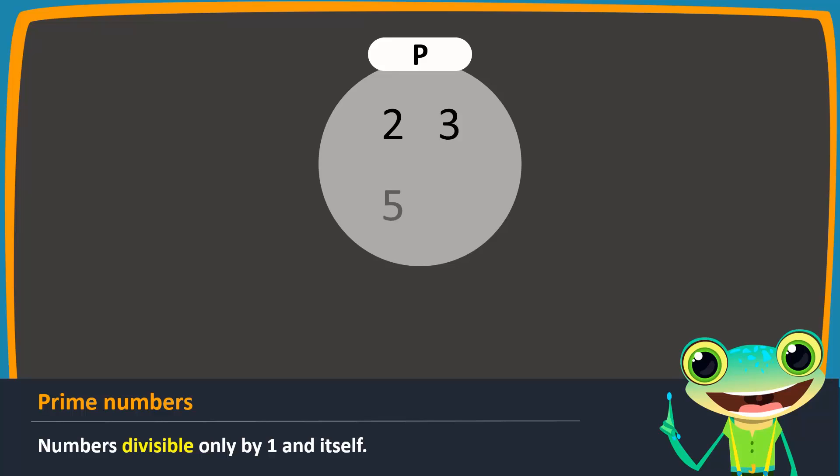So the first four prime numbers are 2, 3, 5, and 7. If P represents this set, then set P in tabular or roster form is equal to open brace 2, 3, 5, 7, close brace.